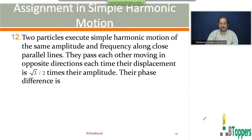Two particles execute simple harmonic motion of the same amplitude and frequency along close parallel lines. They pass each other moving in opposite directions each time their displacement is (√3/2) times their amplitude. Their phase difference is asked.